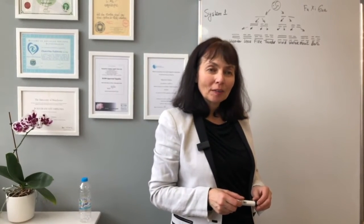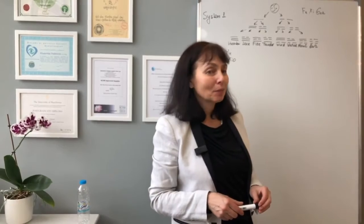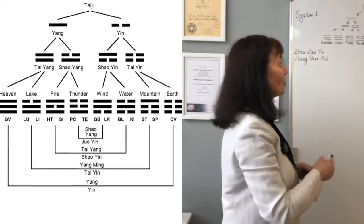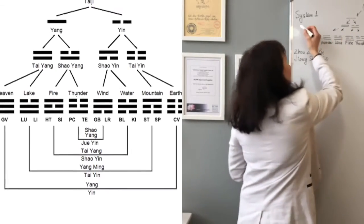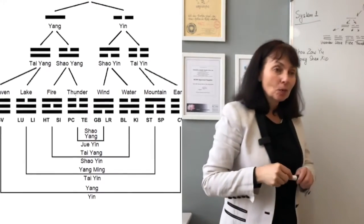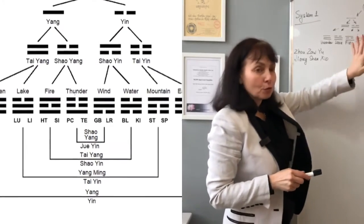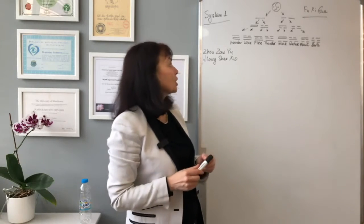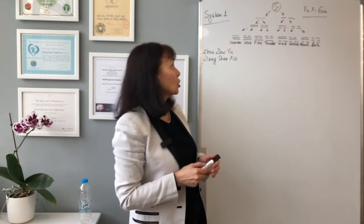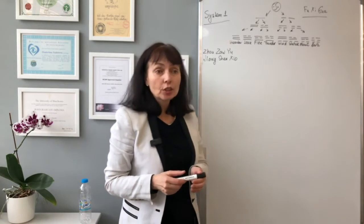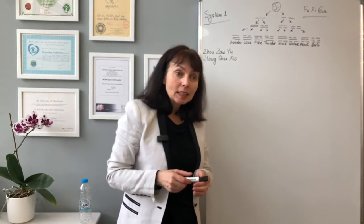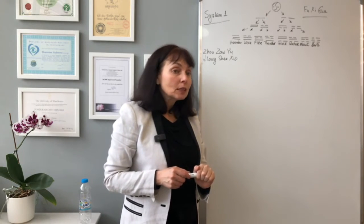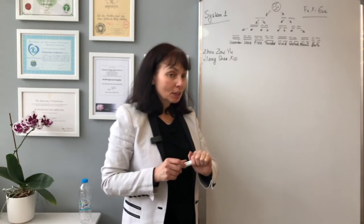So far we have learned system 1 and system 2. You can recognize the famous prenatal Bagua, or Fusigua. System 1 came directly from Fusigua. Later, two physicians — Zhou Zhouyu and Zhang Shengxiu — reconciled the distribution of the meridians and rewrote Fusigua in a different way.